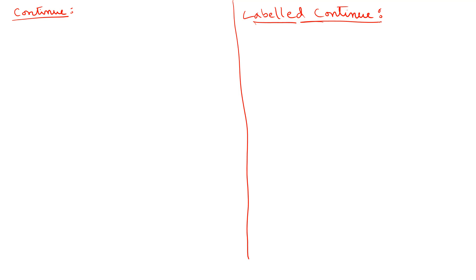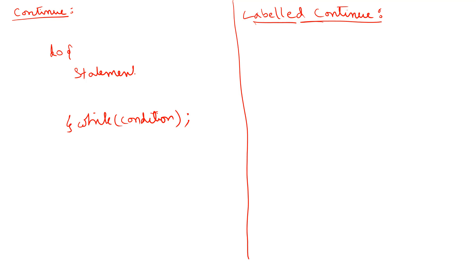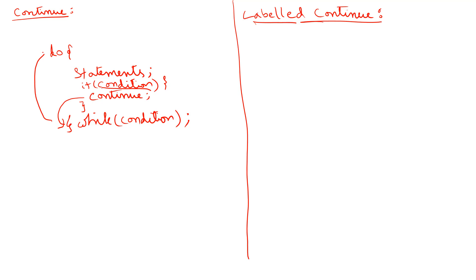A continue statement is used to go to the end of a loop. For example, I have a do-while loop here with a while condition and a set of statements. If at a particular condition I want to come to the end of the loop, I will say if some condition and then continue. When I say continue and this condition is satisfied, it comes to the end of the loop and then goes back again and proceeds with the remaining things. This is how a simple continue statement is used.